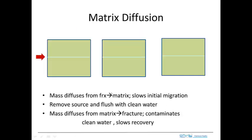Here is the matrix diffusion process. There's a fracture or high permeability channelway right here and flow occurs along that, which creates a high concentration in the fracture that causes a concentration gradient between the fracture and the matrix. That concentration gradient drives diffusion from the fracture out into the matrix.